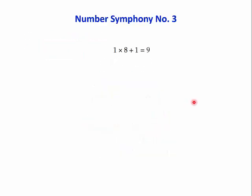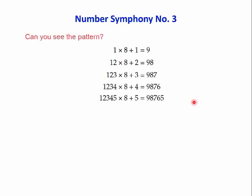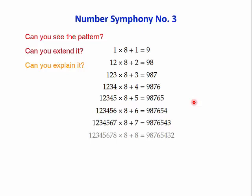Symphony number three: one times eight plus one equals nine. Twelve times eight plus two equals ninety-eight. And again, we've got a pattern developing. Can you see the pattern? Can you extend it? Can you explain it? This is a lovely way of teaching children through patterns.